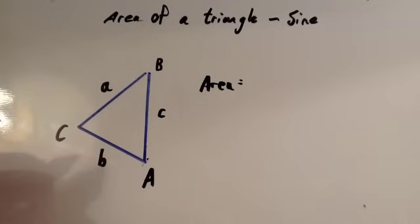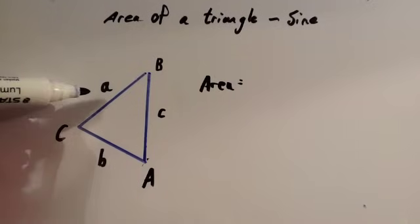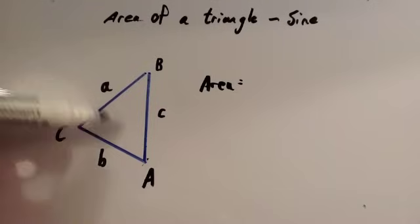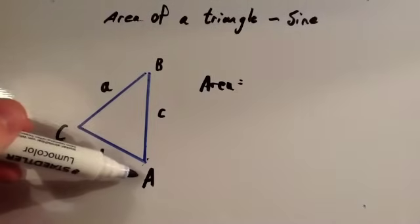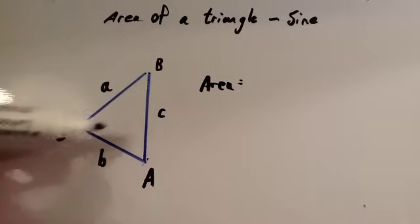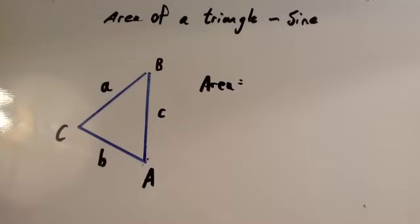So we've got a triangle here, and we have labeled the sides little a, little b, and little c. And as you should know, the angles opposite the sides are called capital A, the one opposite little b is capital B, and the one opposite little c is called capital C.